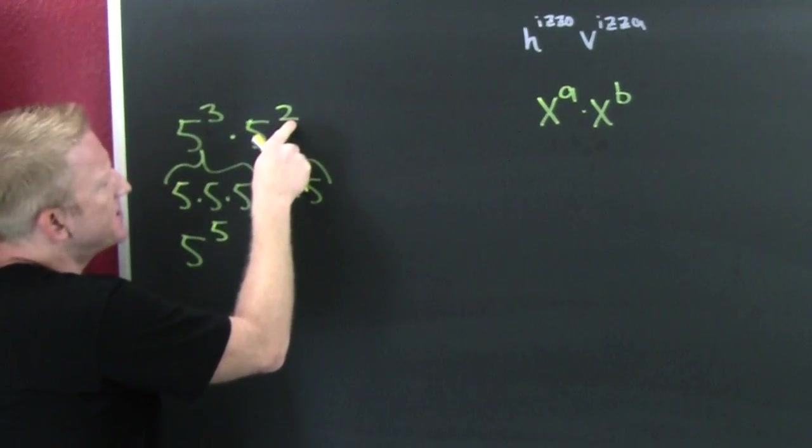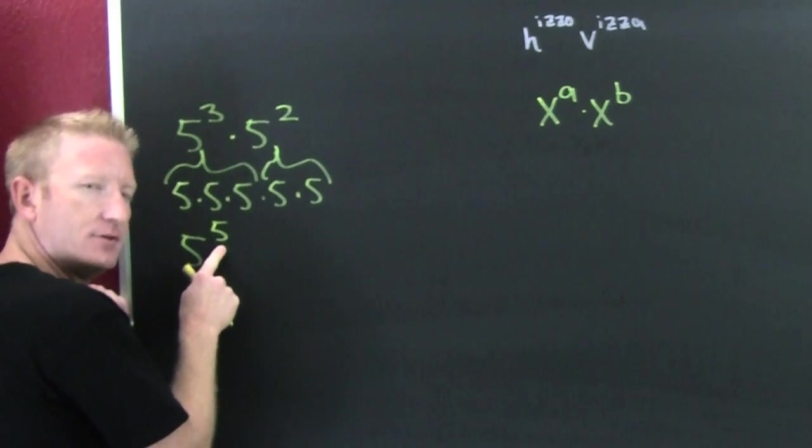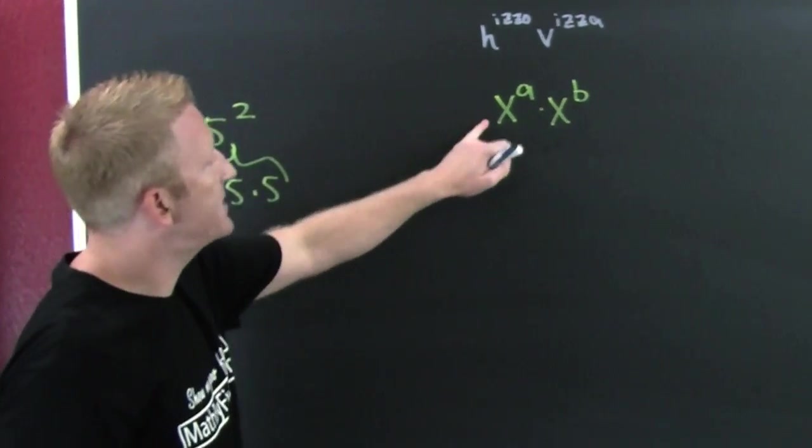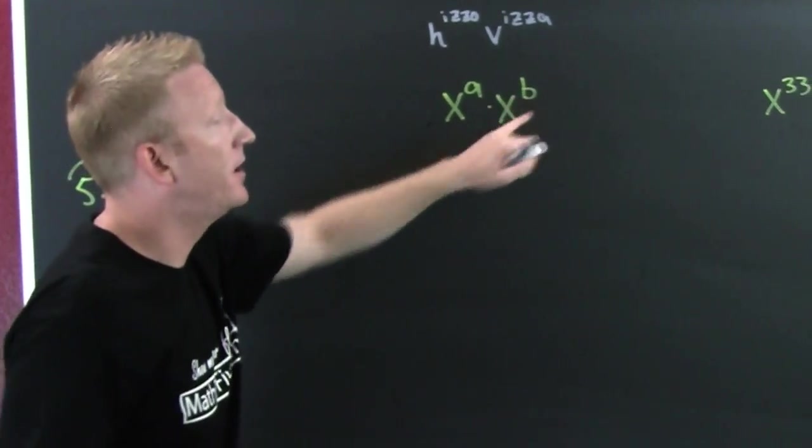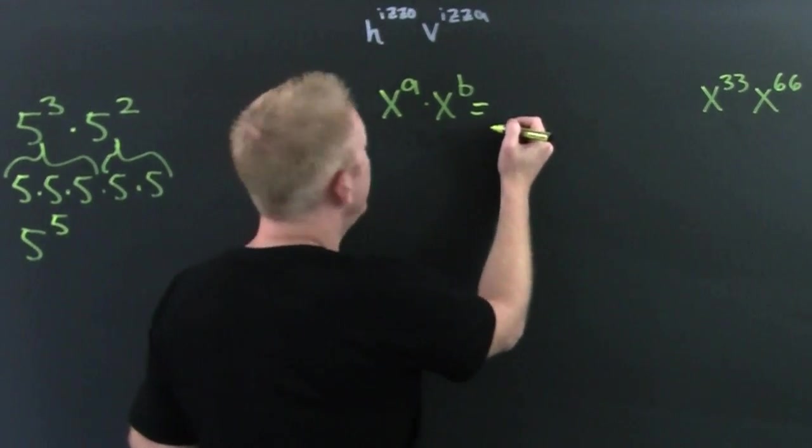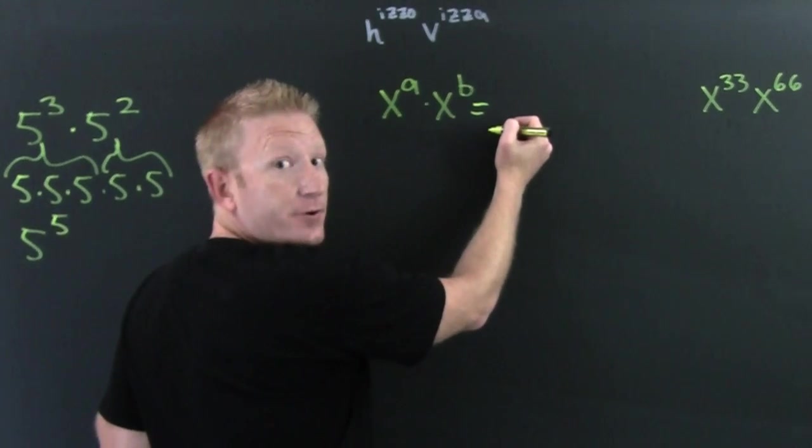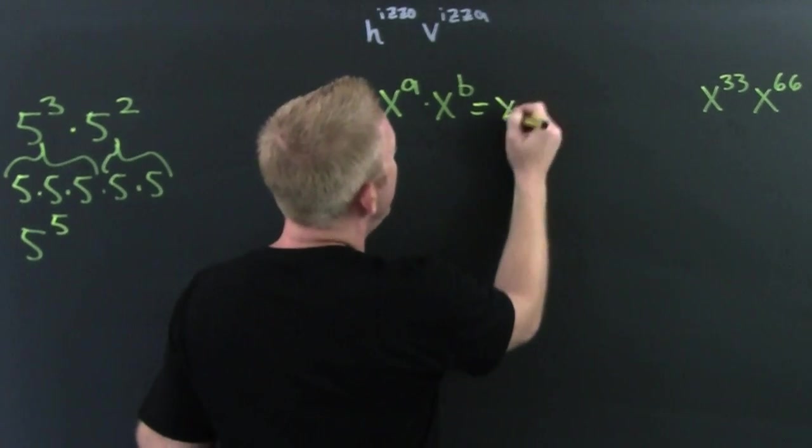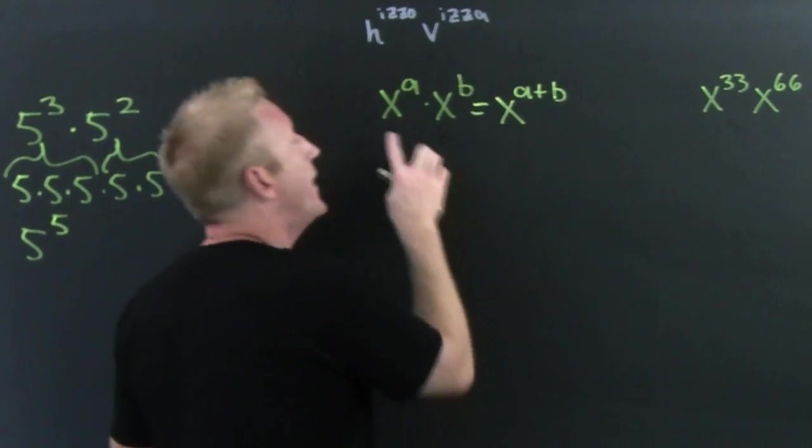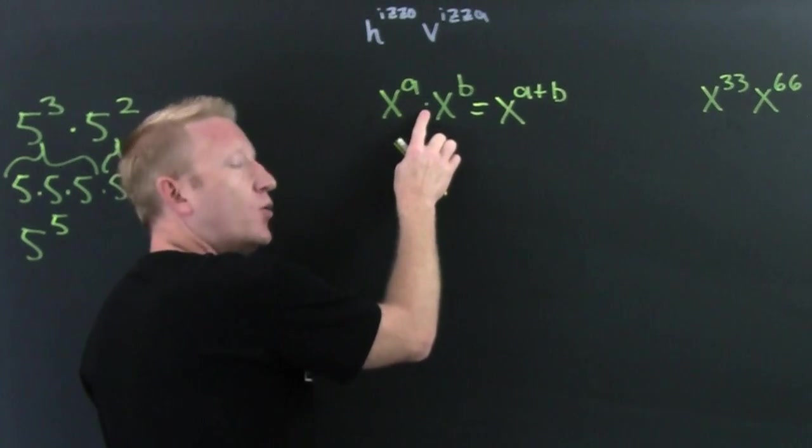If we have x to the a times x to the b, what did we get there? Wait for it - x to the a plus b. If you have the same base and you're multiplying, what are you going to do to the exponents? Adam.